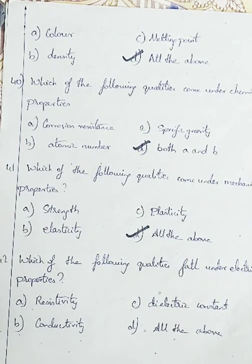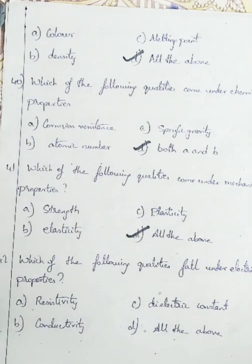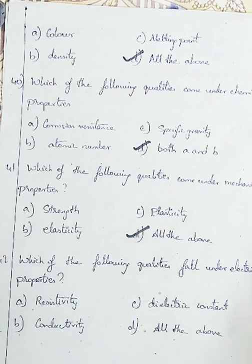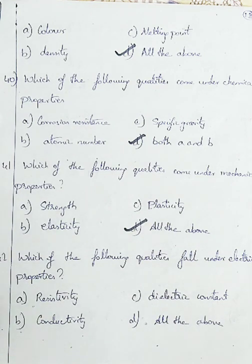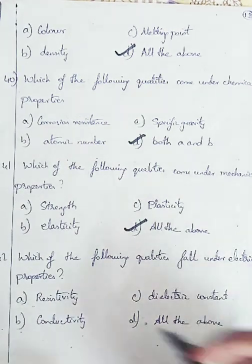Question 42: which of the following qualities comes under electrical properties? Option A: resistivity, Option B: conductivity, Option C: dielectric constant, Option D: all the above. Resistivity, conductivity, and dielectric constant all fall under electrical properties. So we will be going with Option D, all the above.